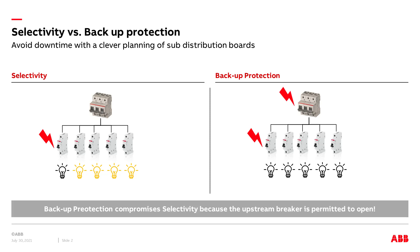In cases where the available short circuit level exceeds the short circuit rating of the downstream breakers, a current limiting upstream breaker can be used to ensure proper protection of the installation.